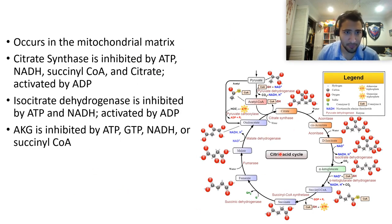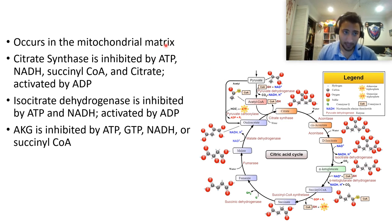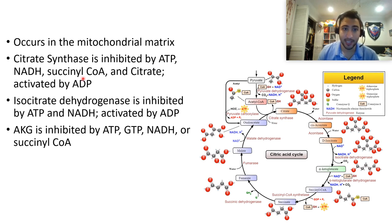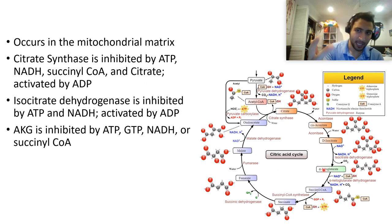The TCA cycle occurs in the mitochondrial matrix. What inhibits the first step? The goal of the TCA cycle is to make energy and intermediates, so high energy inhibits it. NADH, ATP, succinyl-CoA, and citrate itself all inhibit citrate synthase. ADP activates it. Isocitrate dehydrogenase is similarly inhibited by ATP and NADH, activated by ADP. Alpha-ketoglutarate dehydrogenase is inhibited by ATP, GTP, NADH, and its immediate downstream product succinyl-CoA.